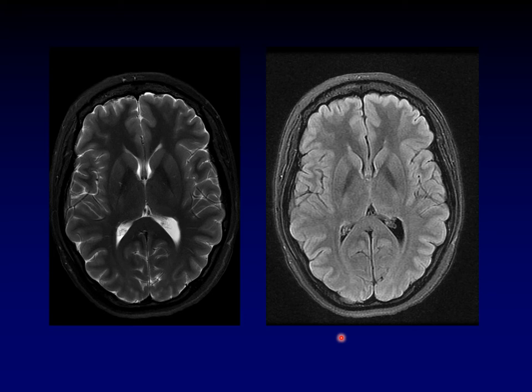This sequence is called a FLAIR sequence — fluid attenuation inversion recovery — one of our workhorse sequences that we go to when we want to detect pathology. It's actually a modified T2 sequence in which we have suppressed all of the CSF. This is really useful when you have a bright lesion right next to the ventricle, because it's hard to see it unless you get that CSF out of the way.